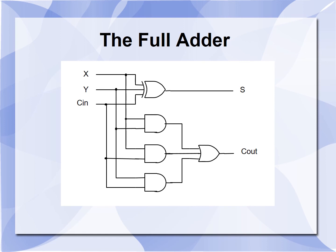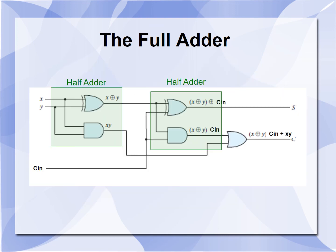The full adder circuit consisting of a three-input XOR gate is also shown here. This is another way of drawing the full adder. All three inputs X, Y, and C-in are fed to the XOR gate, and at its output we have the sum. There are three AND gates connected to X·Y, X·C-in, and Y·C-in. The outputs of all three AND gates are fed to an OR gate to produce the carry output. So we can imagine the full adder to be made up of two half adders as shown in the figure.